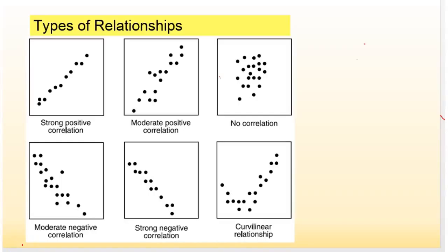There are several types of relationships that we look at when we're looking at graphs, and it all comes down to positive and negative and what we call curved relationships is what we're looking at here.